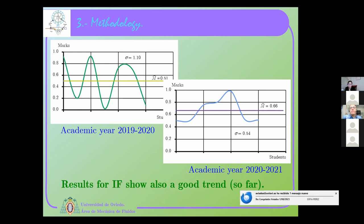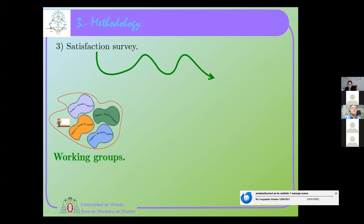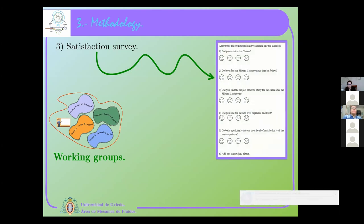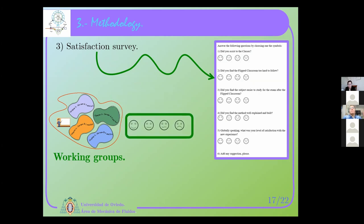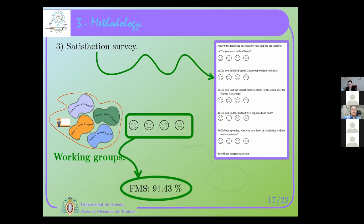The decrease in standard deviation means students were working in a more community way. The satisfaction survey results were good. We did surveys for the students with questions like: Did you attend classes? Did you find the flipped classroom too hard to follow? Did you find the subject easier to study for the exam after the flipped classroom? Did you find the method well-explained and well-built? Globally, what is your level of satisfaction with the new experience? The results were quite good on satisfaction for both subjects.